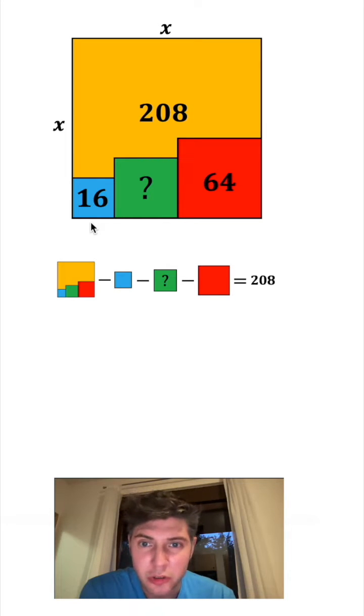So I know that the side length of this blue square is equal to four, and the side length of this red square is equal to eight. The side length of the green square is gonna be this whole x minus four minus eight, which is x minus 12.